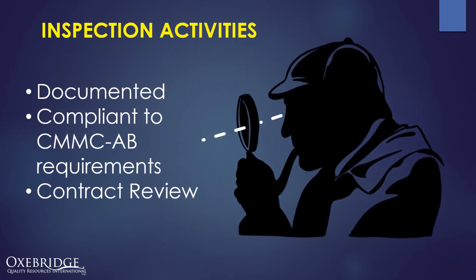A bulk of the standard is dedicated to defining what you have to do to define your own inspection activities. ISO 17020 does not go into detail on these because it can't know what every reader's inspection activity will be — so you will have to determine that yourself. All inspection activities must be documented in formal procedures, and inspectors must be trained on those. These activities must also comply with the applicable scheme requirements, such as the rules issued by the CMMC AB. Before taking any inspection work, the body must perform a formal contract review to ensure it only accepts work within its area of expertise, capabilities, and capacity.